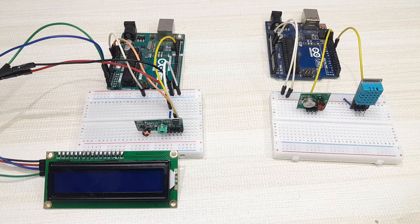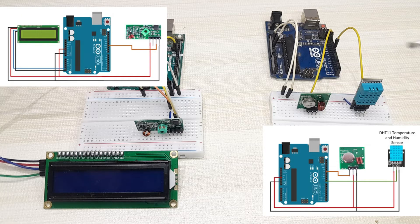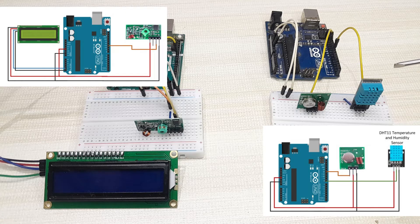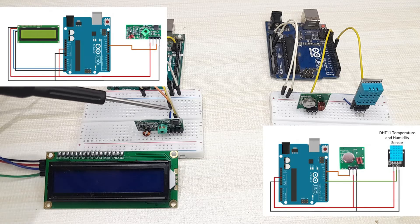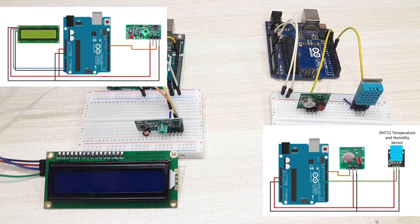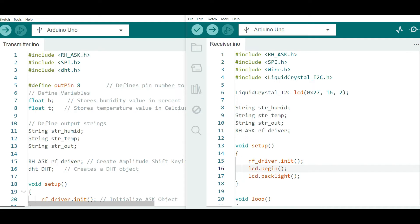Now I'm going to show you how to send sensor data from transmitter to receiver. I'm going to use a DHT11 temperature and humidity sensor on the transmitter side, and the data will be displayed on an I2C LCD on the receiver side. The transmitter module connection remains as before with the data pin connected to Arduino pin 12. The DHT11 data output pin connects to Arduino pin 8, sharing the same ground and VCC. On the receiver side, the receiver module connects as before to pin 11, and the I2C LCD clock pin connects to analog pin A5 and data pin to analog pin A4.